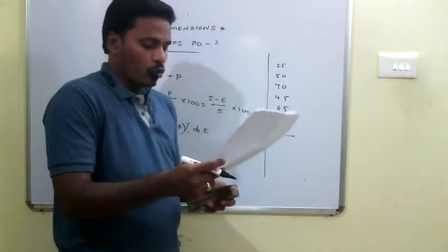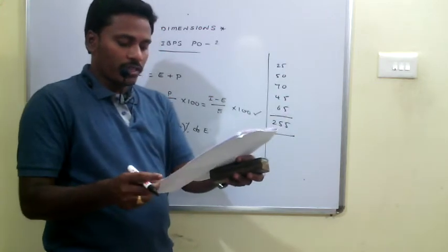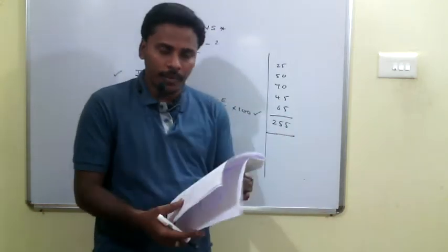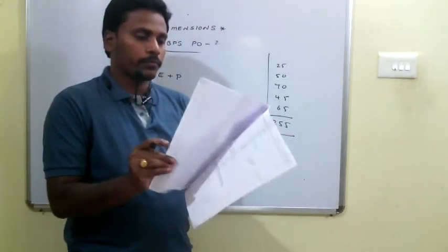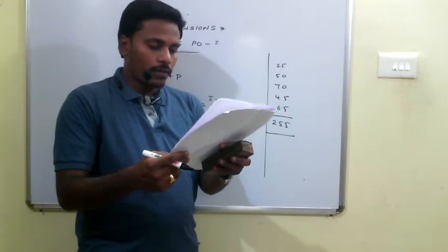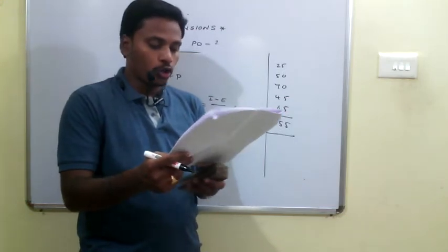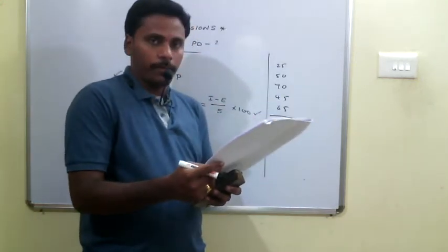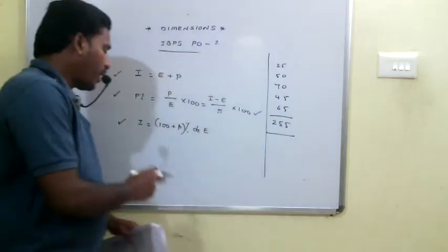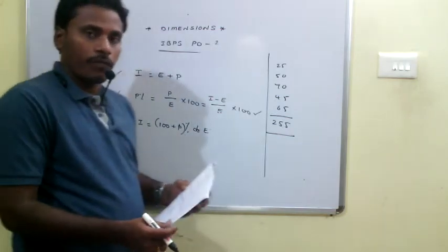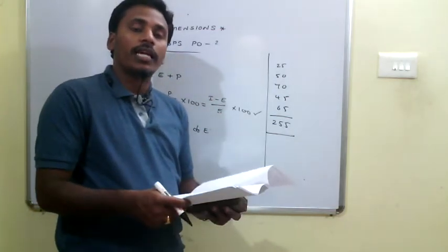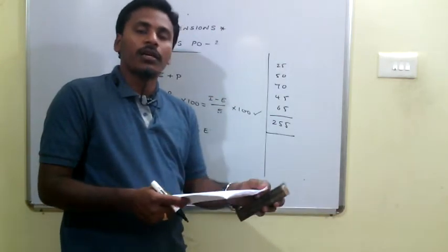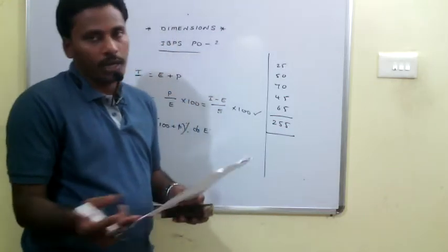Q32: If expenditure in 2006 was 75,000, find the ratio of income to expenditure in 2006. The profit percentage in 2006 is 50%, so income = 150% of expenditure. The ratio of income to expenditure = 150/100 = 3 to 2.